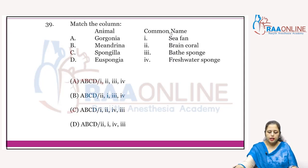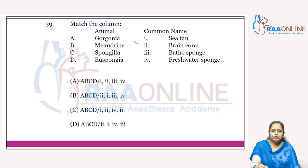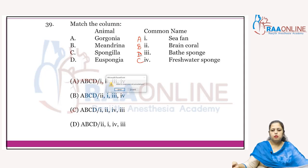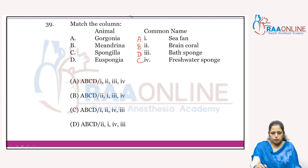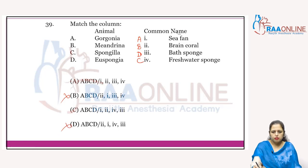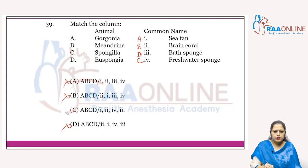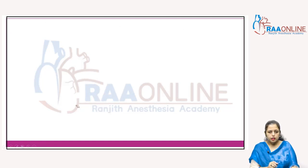Gorgonia is the sea fan — A1. Meandrina is the brain coral. Spongilla is the freshwater sponge. Euspongia is the bath sponge. A1 is present in A and C — B and D cancel. B2 is in both. C4 — answer is C.